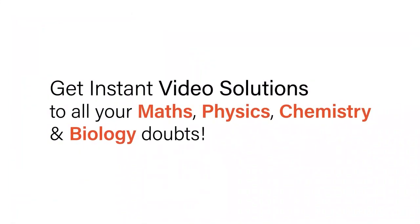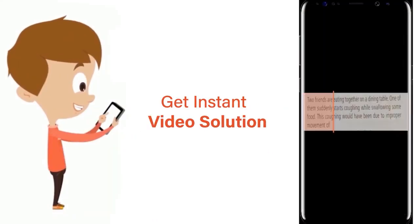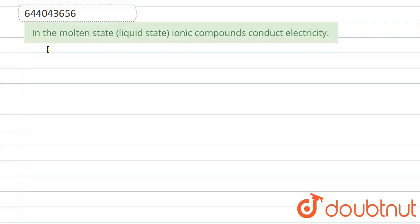With Doubtnet, get instant video solutions to all your maths, physics, chemistry and biology doubts. Just click the image of the question, crop the question and get instant video solution. Download Doubtnet app today. Hello everyone, so the question is: in the molten state or liquid state, ionic compounds conduct electricity.